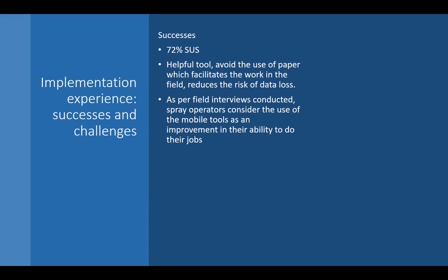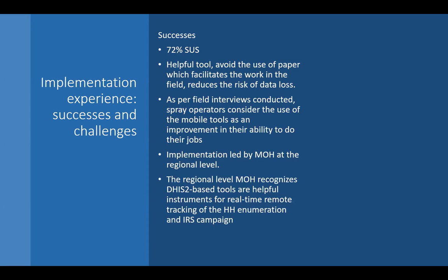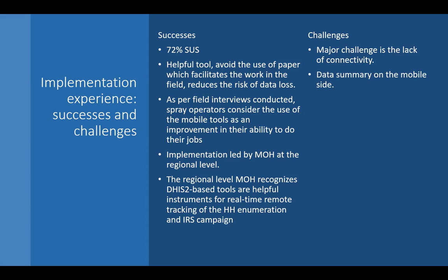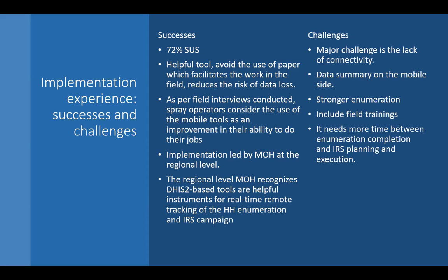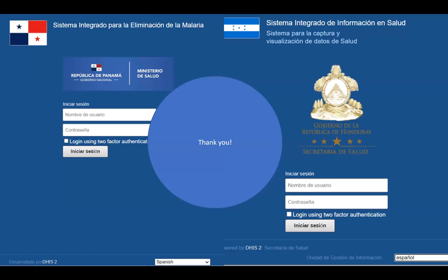Everyone said this improved their ability to do their job and helped them interact with the community. The implementation was better received at the health level — they are using DHIS2 tools and analytic tools for analysis not just for malaria but for other areas. The major challenge right now is the lack of connectivity, and they need some data summary on the mobile side to verify everything has been done correctly. There is also a need for stronger information equity in training and more time between enumeration completion and campaign planning and execution.